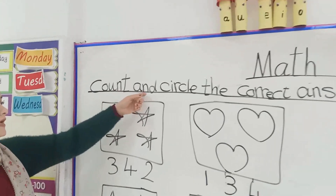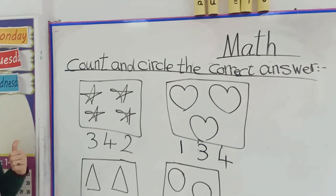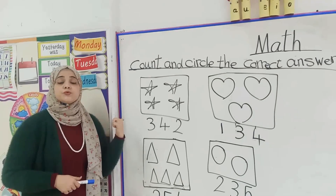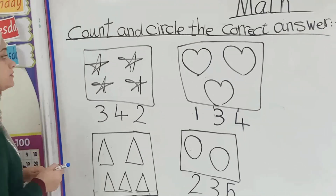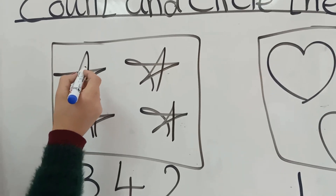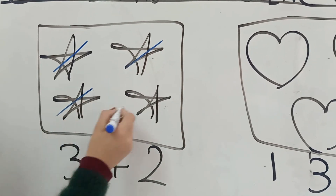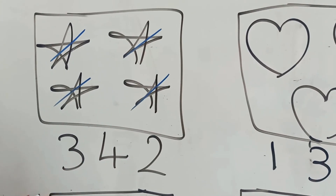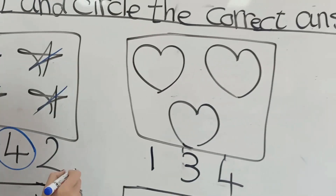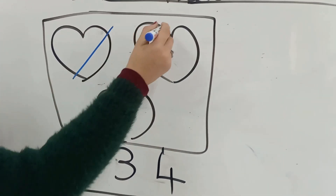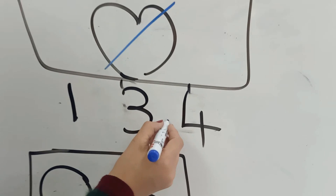In this exercise, count and circle the correct answer. KG1, we are going to count and the number we stop on, we will put a circle around it. Are you ready? Okay, let's go. How many stars here, KG1? Let's count together: one, two, three, four. Excellent. We will put a circle around number four. How many hearts here, KG1? Let's count: one, two, three. We will put a circle around number three.